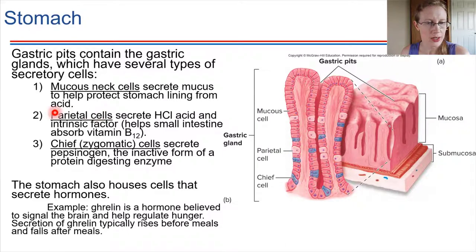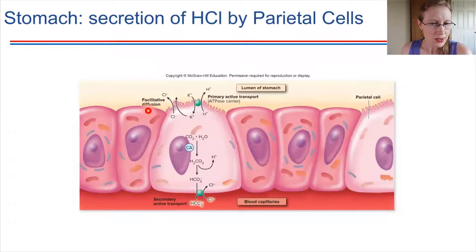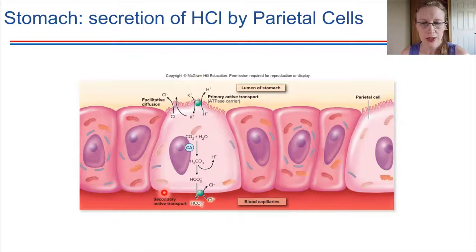Let's focus on the parietal cells — the cells that secrete HCl, hydrochloric acid. These are very specialized cells. The parietal cells have two different surfaces: an apical surface, which faces the lumen of the stomach where the food is located, and a basolateral side, which faces the capillaries around the stomach.